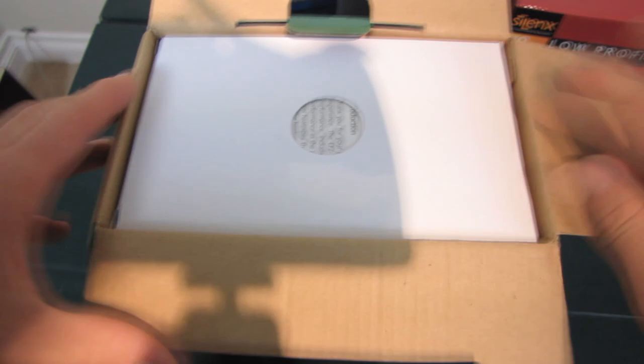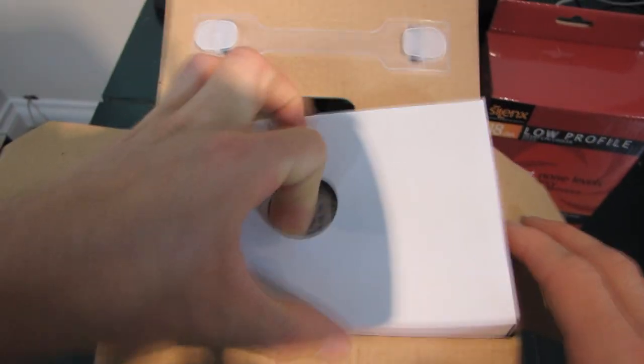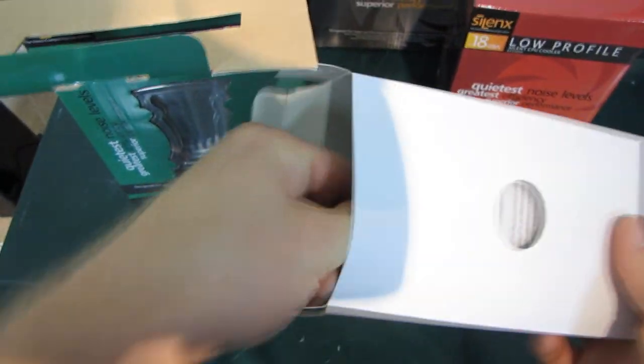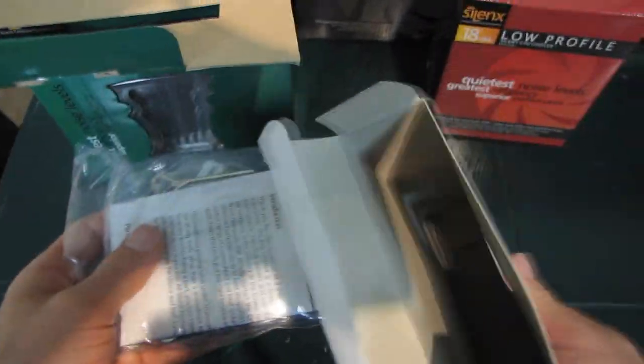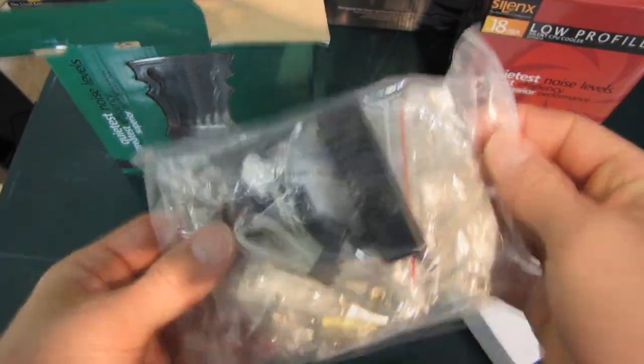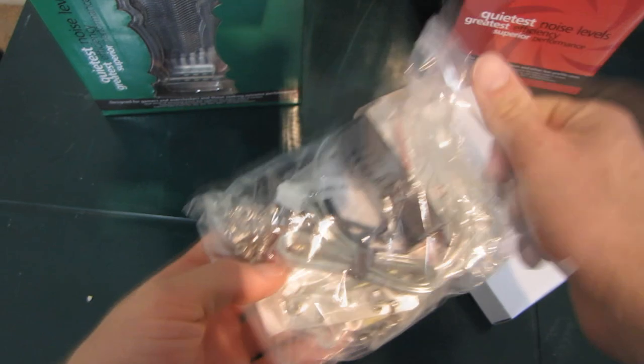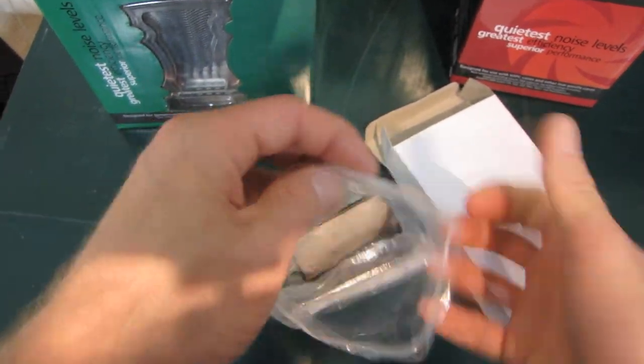Let's go ahead and get this open and see what we have inside. The first thing we find inside is a box. Very exciting white box. And inside the box we will find likely a bunch of mounting gear. It's pretty much exactly the same accessory package that we found with the compact.